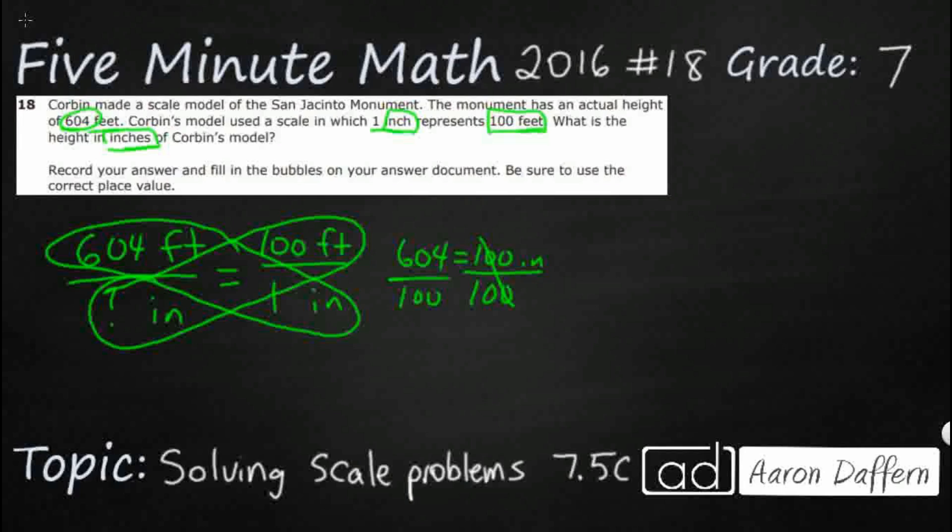If I want to, I can actually just go ahead and do my long division. 100 into 604. I will show you a shortcut in just a moment, but you can always do it this way. So 100 goes into 6? Nope. 60? Nope. 604? Yeah, 6 times.